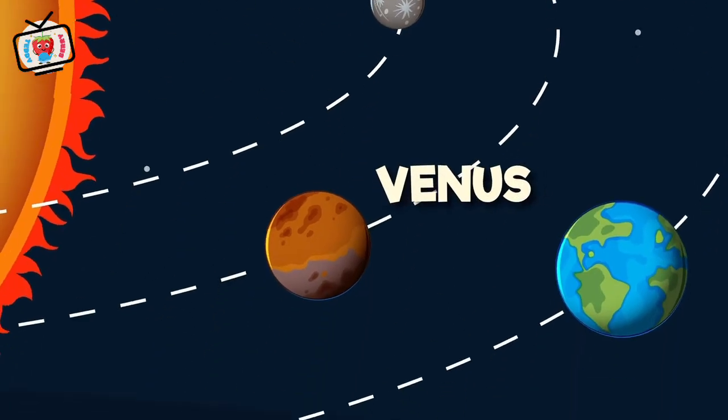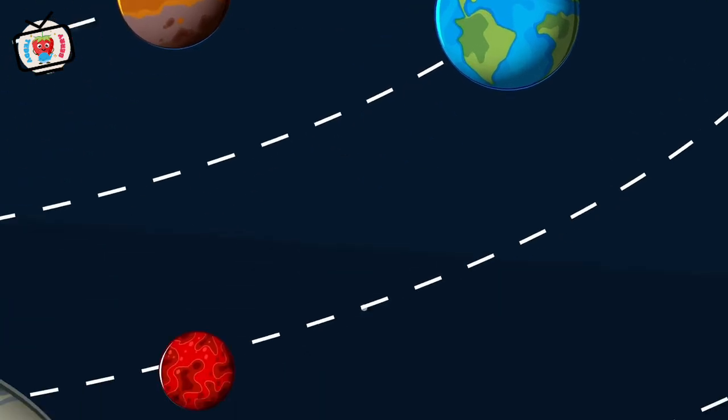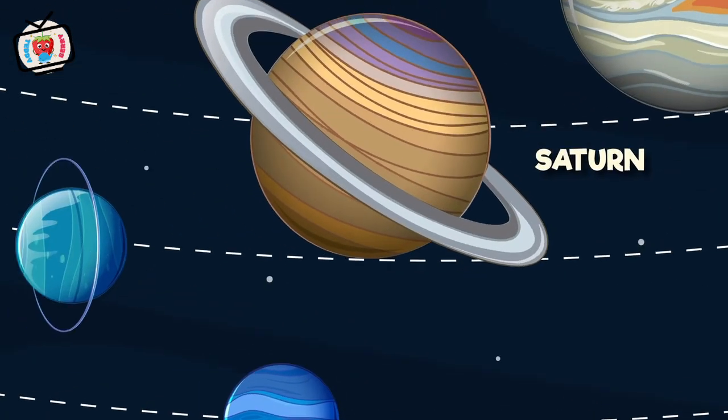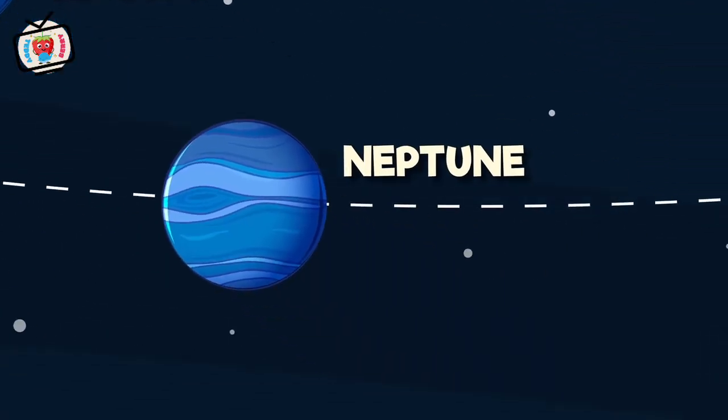Mercury, Venus, Earth and Mars, Jupiter, Saturn among the stars, Uranus and Neptune now we know, eight planets in a solar show.